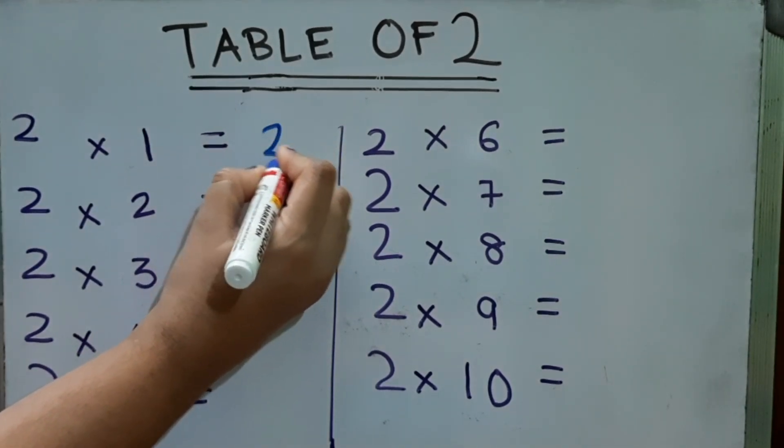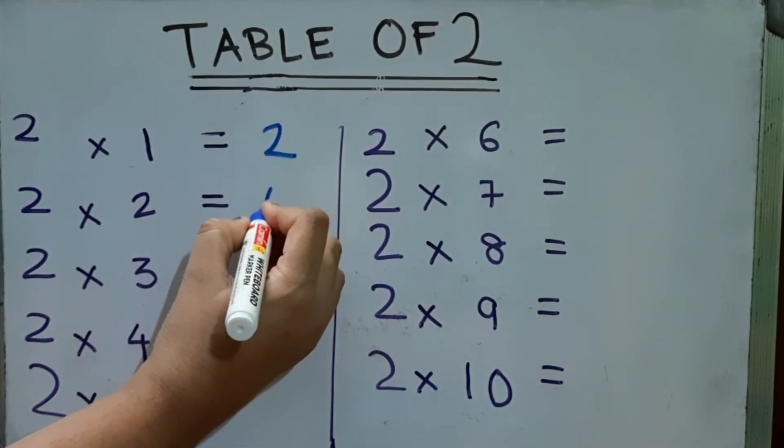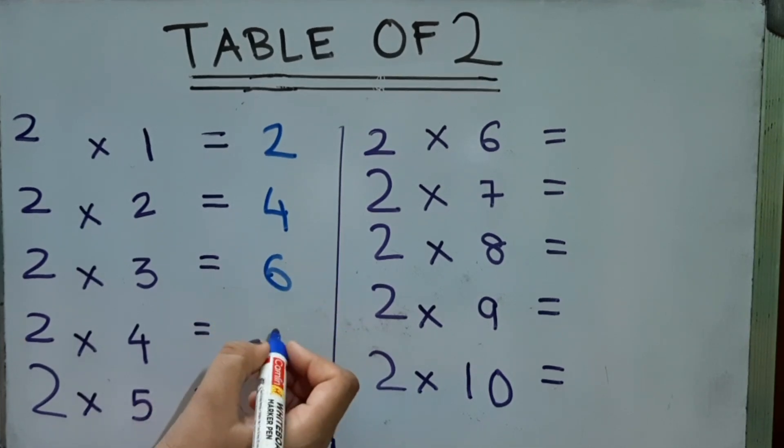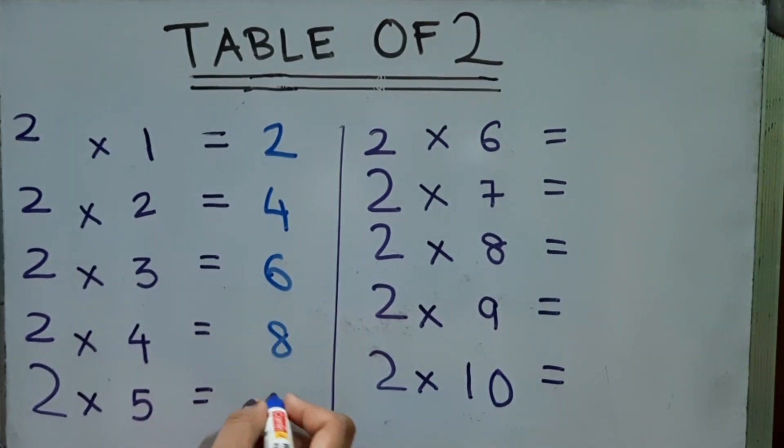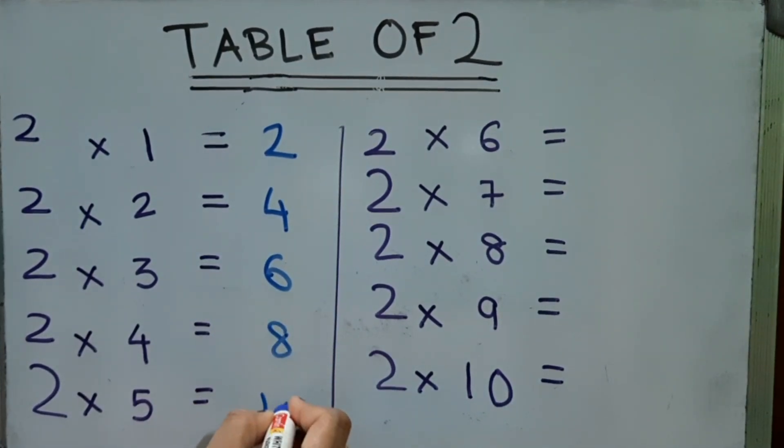2 into 1, 2. 2 into 2, 4. 2 into 3, 6. 2 into 4, 8. 2 into 5, 10.